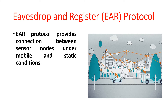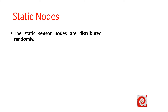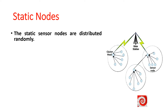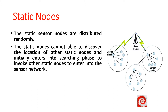EAR protocol provides connection between sensor nodes under mobile and static conditions. The mobile nodes can be used with the statically deployed sensor nodes to establish connections. The static nodes are distributed randomly. Here is a representation of a wireless sensor network that consists of static sensor nodes deployed in a random manner. The static nodes cannot discover the location of other static nodes and initially enter into a searching phase to invoke other static nodes to enter into the sensor network.